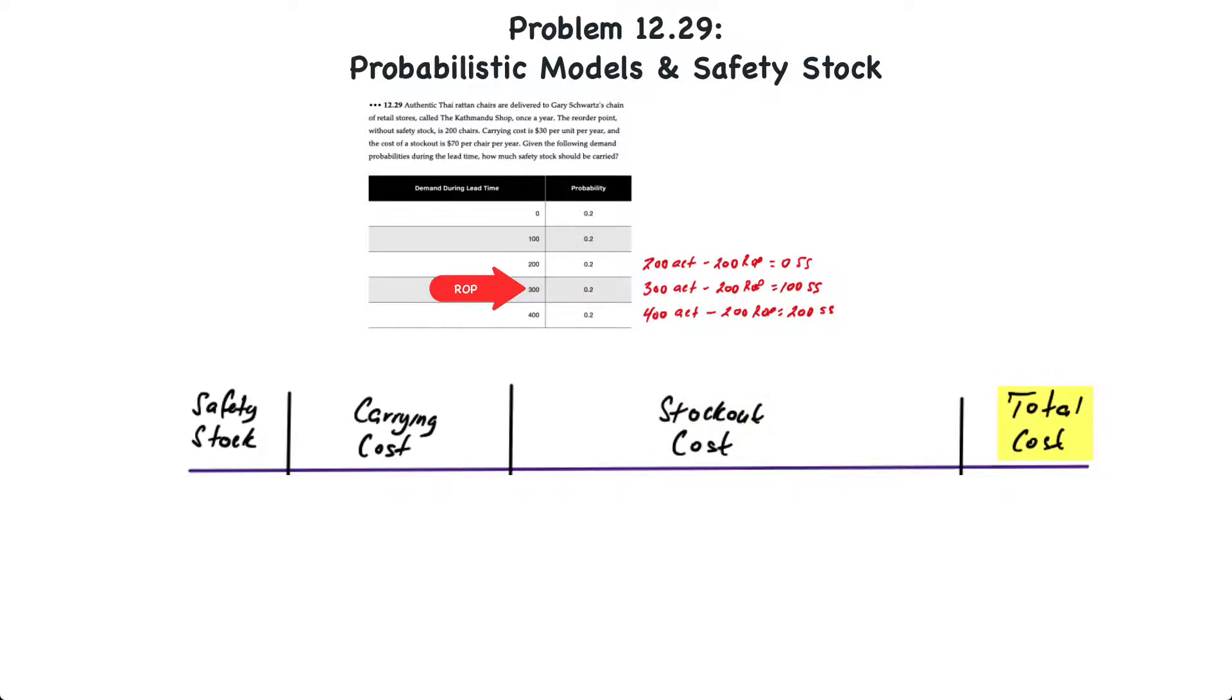At zero safety stock, there is no carrying cost. So zero times $30 is zero. Now let's look at the stockout cost. Based on probabilities there's a 20% chance of being 100 units short, or 20 chairs, and a 20% probability of being 200 units short, which is 40 chairs, for a total of 60 chairs of potential lost revenue if demand ends up being either 300 or 400 units. When we multiply those 60 chairs times the stockout cost of $70, that's a total of $4,200. The total cost therefore is zero carrying cost plus $4,200 in stockout cost for a total of $4,200.